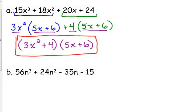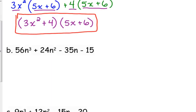Let's look at another one. Let's look at 56n cubed plus 24n squared minus 35n minus 15. What is their greatest common factor? It's bigger than 6. It's 8. Between n cubed and n squared, they both have at least n squared. So inside of our parentheses, we're left with 7n plus 3.